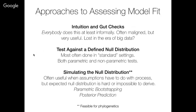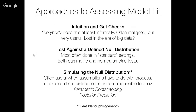In general, comparing the parametric bootstrapping distribution to the posterior predictive distribution, the posterior predictive distributions are broader because they take into account uncertainty in the inferred parameter values of the model. This leads posterior prediction to be more conservative than parametric bootstrapping. So we've walked through three general categories for assessing model fit: intuition and gut checks, tests against known null distributions, and tests against simulated null distributions. Simulating the null — either with parametric bootstrapping or posterior prediction — is the only approach that's generally feasible and objective in phylogenetics.